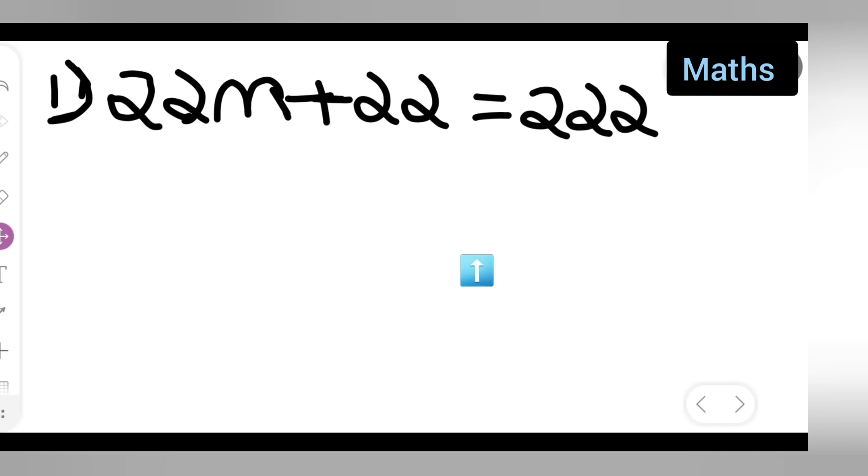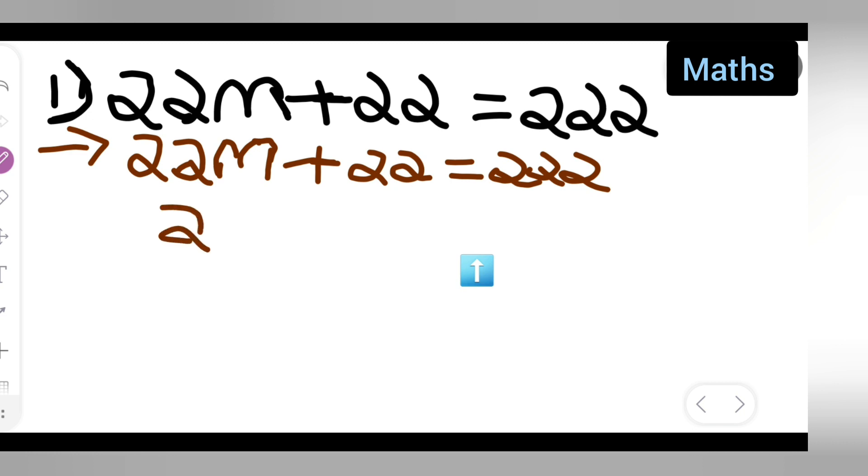First, write down 22m plus 22 is equal to 222. Now take the variable term one side, keep the constant other side.